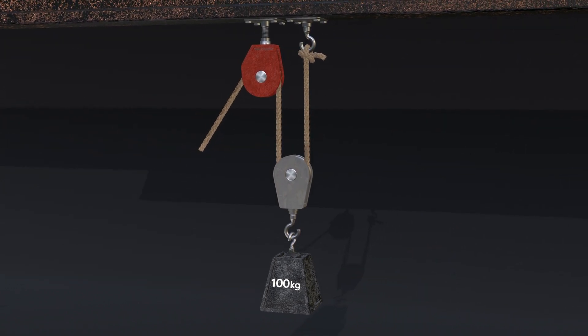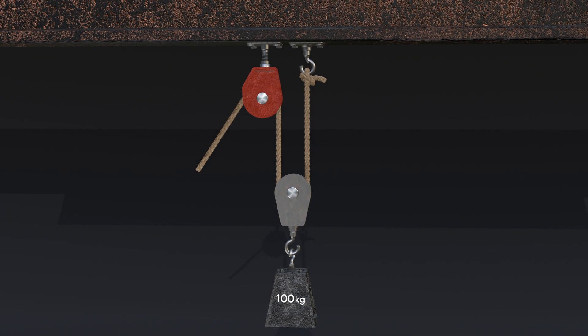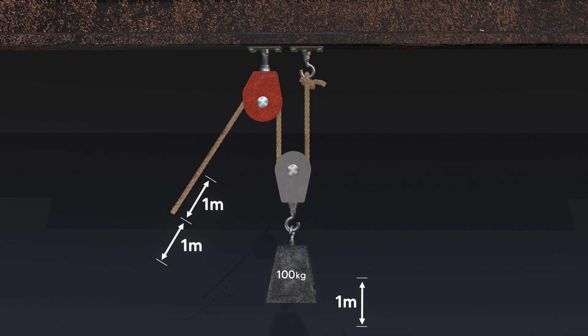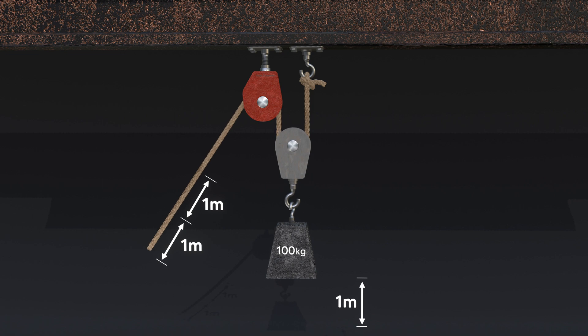The price we pay for a double advantage in strength is distance. So, to raise the load one meter, we need to move the end of the rope two meters.